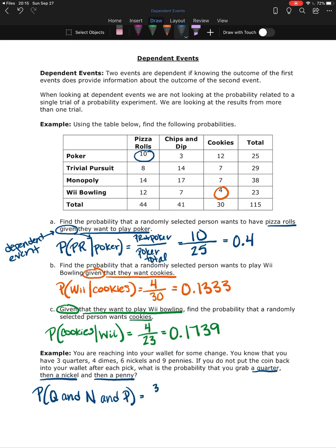So when I reach in to find the quarter, there are three quarters, and there are three plus four plus six plus nine, 22 total coins in my bag. Then I reach in again, and I want to grab a nickel. So now I'm going to look at how many nickels there are. There are six nickels. But instead of 22 coins in the bag, now there's 21 coins in the bag. So the probabilities are changing because the number of coins are changing. The outcome for my second pick is going to be dependent on what I grabbed for my first pick. So my first pick is a quarter, and my second pick is a nickel.